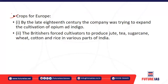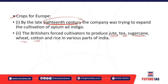Now let's understand the changing pattern of crops in India — how different crops were demanded by the British. By the late 18th century, the company was trying to expand cultivation of opium and indigo, as these were in very high demand. They forced cultivators to produce opium and indigo. There was also demand for jute, tea, sugarcane, wheat, cotton, and rice. The Britishers forced cultivators to produce these crops and introduced several new crops in the Indian subcontinent.